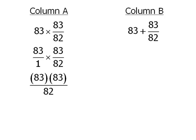Now let's move over to Column B. I want to combine these two values so first I'll rewrite 83 as 83 over 1 and now to add these two fractions we need to have a common denominator. That common denominator will be 82.